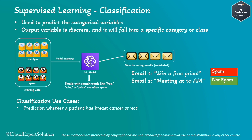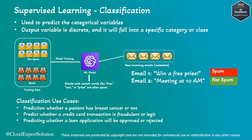There are more use cases for classification: predicting whether a patient has breast cancer or not, predicting whether a credit card transaction is fraudulent or legitimate, predicting whether a loan application will be approved or denied, or classifying images to detect diseases. In all these examples, the output falls into one of a category and cannot have a continuous value.